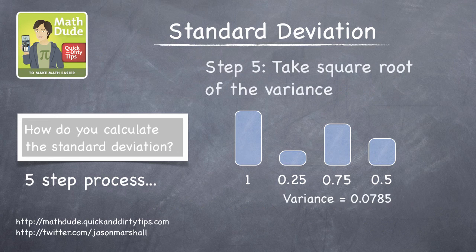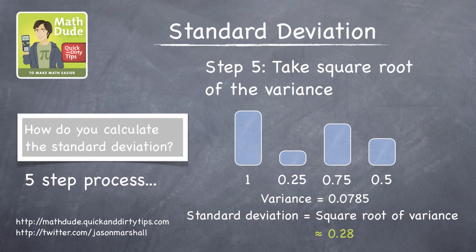Finally, the standard deviation is just the square root of the variance, so it's 0.28.